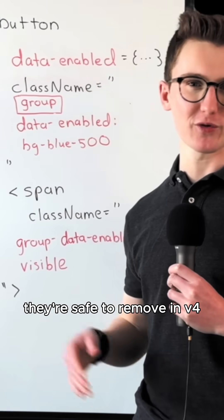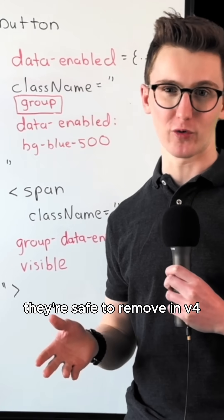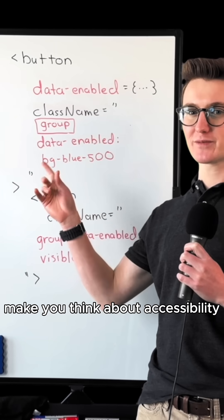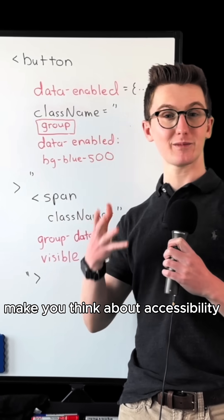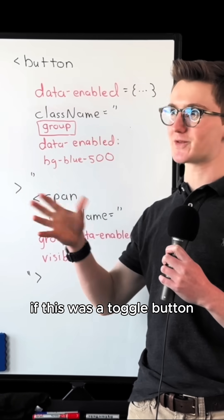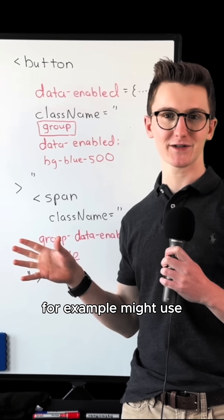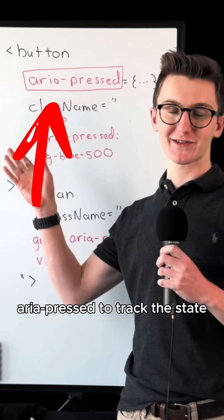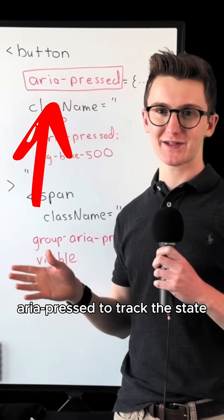Now if these brackets are hurting your eyes, they're safe to remove in version 4. Plus, data attributes make you think about accessibility. If this was a toggle button, for example, you might use ARIA pressed to track the state.